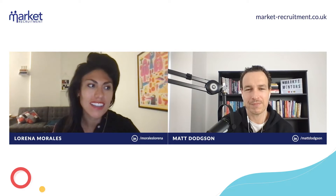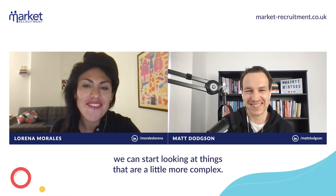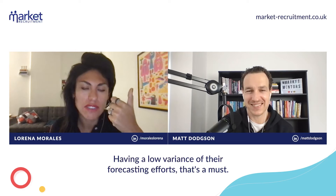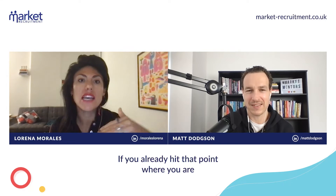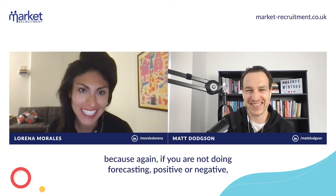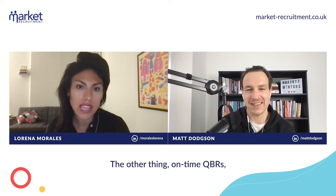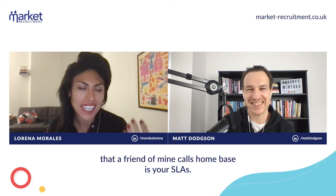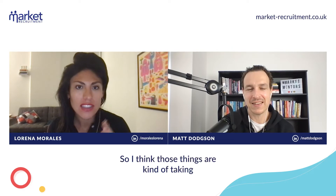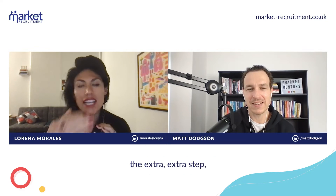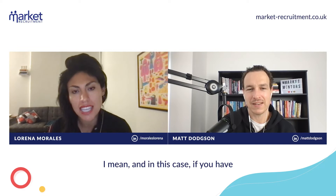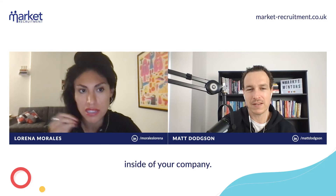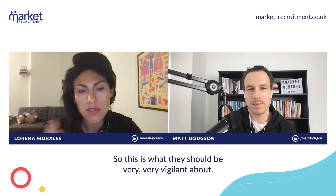Then taking that to the more sophisticated level, we can start looking at things that are a little more complex. Forecasting — having a low variance in your forecasting efforts, that's a must. If you've already hit the point where you are effectively doing forecasting, because if you're not doing forecasting, positive or negative, it's really hard to measure. The other things: on-time QBRs, and what a friend of mine calls home base — your SLAs. What's the time of response on those SLAs? Those are the extra steps, and if you have forecasting effectively, most likely you already have the leader of the revenue operations organization inside your company. This is what they should be very vigilant about.